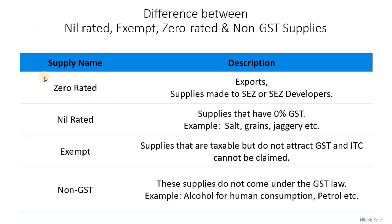Understand this table — we have a column called supply name and the description. Zero rated supply means exports, supplies made to SEZ or SEZ developers, SEZ units or SEZ developers. So these are the only three things; if you are making these types of supplies then that falls under zero rated supplies.